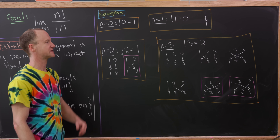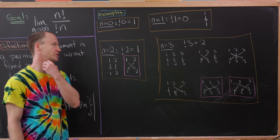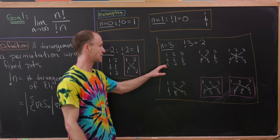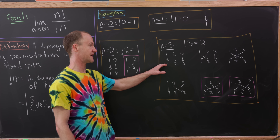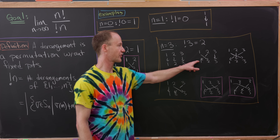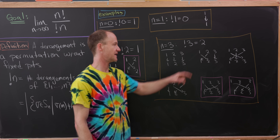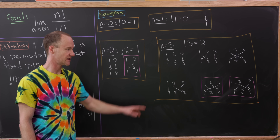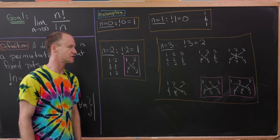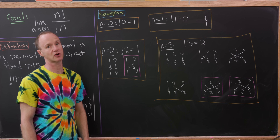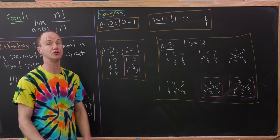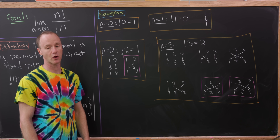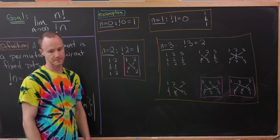The subfactorial of 3 is 2, because observe that in some permutations everything is fixed, or 3 is fixed, or 2 is fixed, or 1 is fixed — leaving just those two maps being the only two derangements.